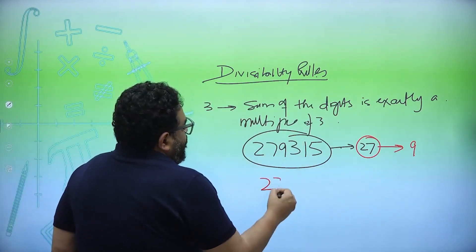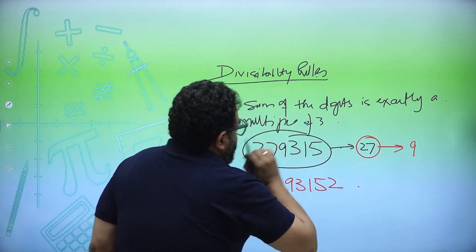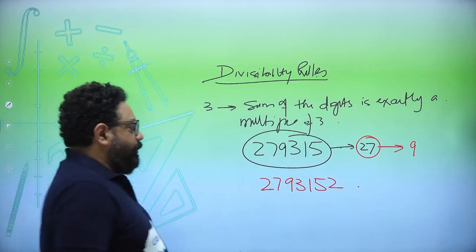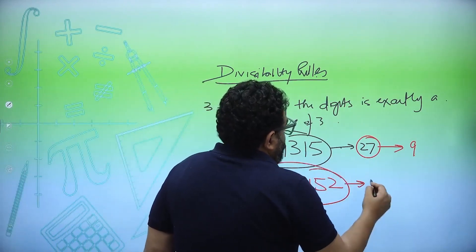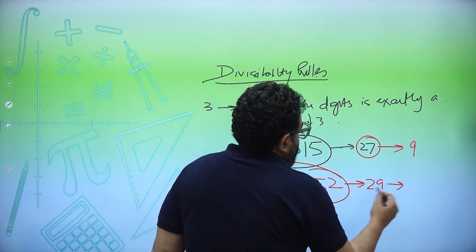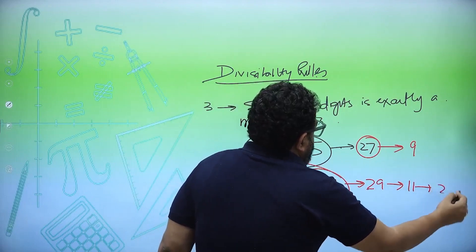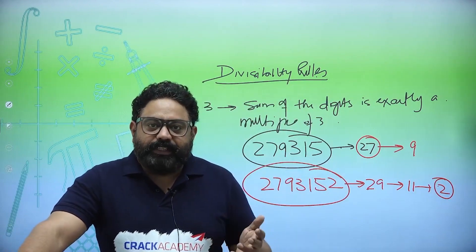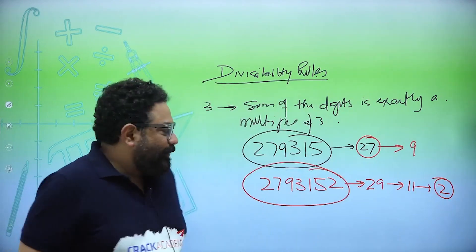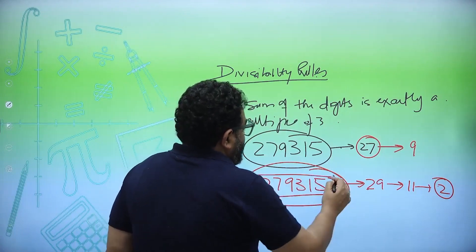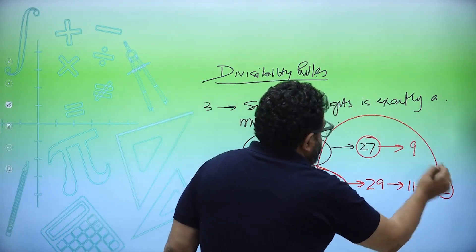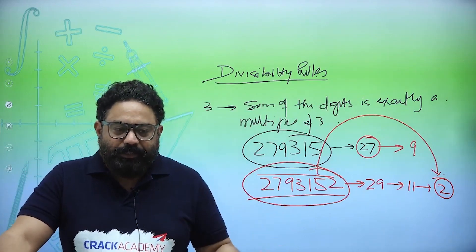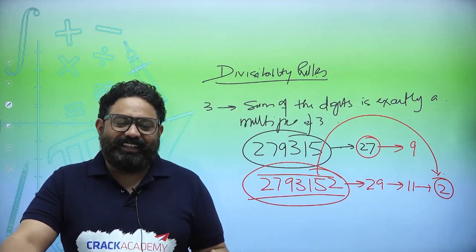This also works with remainders. For example: what is the remainder when 27931522 is divided by 3? Add the digits — you get 29, then 2+9=11, then 1+1=2. Since 2 is not a multiple of 3, the remainder when this number is divided by 3 is 2.